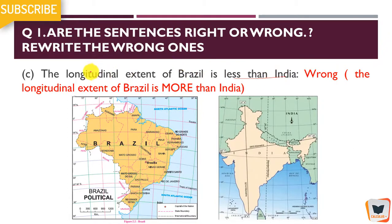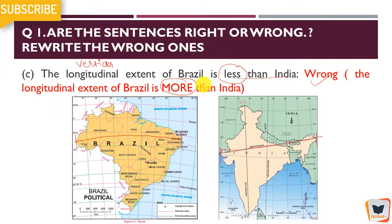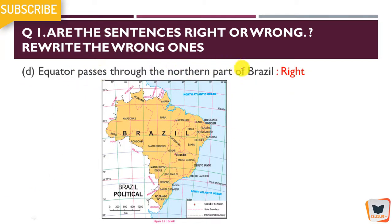The longitudinal extent of Brazil is less than India. Longitudes are vertical lines. The longitudinal extent of Brazil goes from one side to the other, and similarly for India — from Gujarat to Arunachal Pradesh. Looking at the map, the longitudinal extent of Brazil is not less than India; it is more than India. So the statement is wrong — the longitudinal extent of Brazil is more than India.